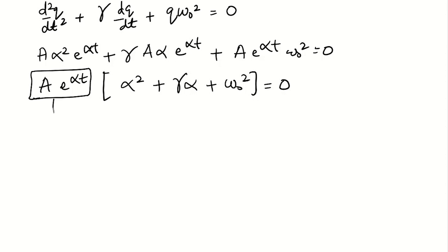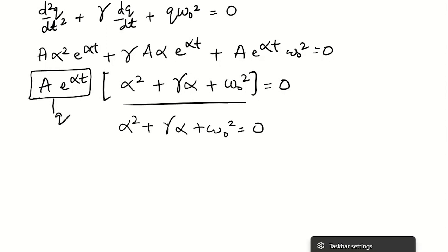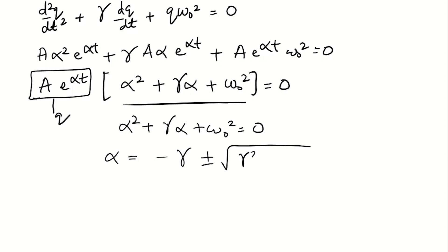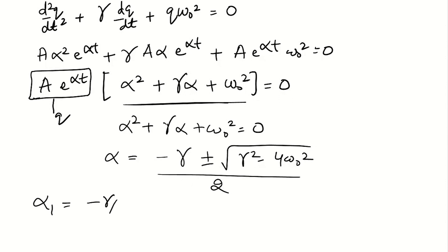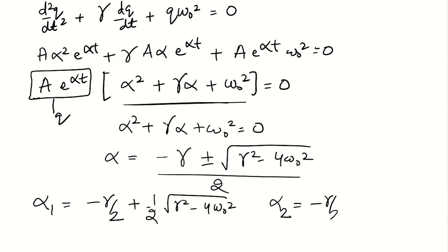Since A·e^(αt) describes how the charge is changing with time, it cannot be zero. That means the quadratic equation α² plus γ·α plus ω₀² equals zero must hold. Finding the roots: α equals (−γ ± √(γ² − 4ω₀²)) / 2. So alpha₁ is −γ/2 plus (1/2)√(γ² − 4ω₀²), and alpha₂ is −γ/2 minus (1/2)√(γ² − 4ω₀²).